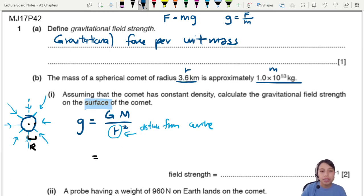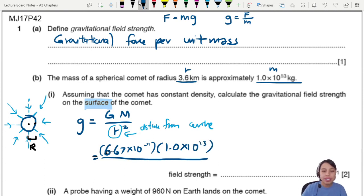So g is going to be - what's our G constant? 6.67 times 10 to the negative 11, times the mass, 1.0 times 10 to the 13 kg, everything in SI units. Divide by the radius, 3.6 km, so we put that as 3.6 times 10 to the 3 meters - kilo is 10 to 3, squared.